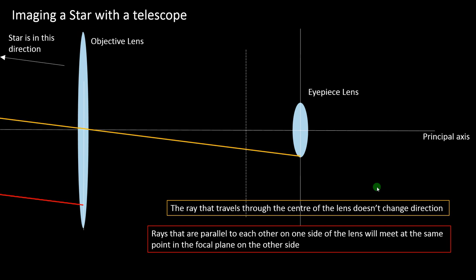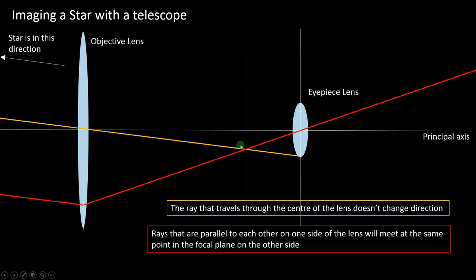Looking at the focal plane, the red and orange rays will intersect there. The red ray is chosen so it also goes through the centre of the eyepiece lens, meaning it keeps going in the same direction. In practice, you'd put your ruler on the centre of the eyepiece lens and at the point where the previous ray crossed the focal plane to find where to draw your parallel ray. Then, since the rays start from the same point in the focal plane of the eyepiece lens, we know they'll end up parallel on the other side.